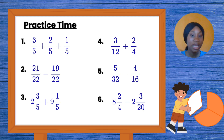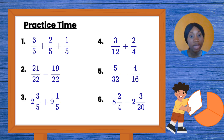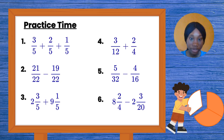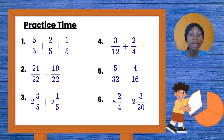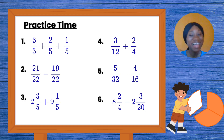Question five: five over thirty-two minus four over sixteen — write multiplication table for thirty-two and sixteen, find a common number, and work it out. Question six involves a mixed fraction subtraction — the whole number part gives you six, then work out two over four minus three over twenty. And with that, we've come to the end of today's amazing class on how to add and subtract both like fractions and unlike fractions. I'll see you in our next video — bye!